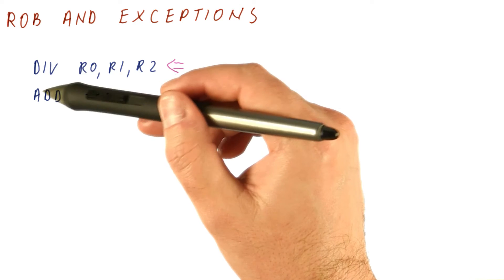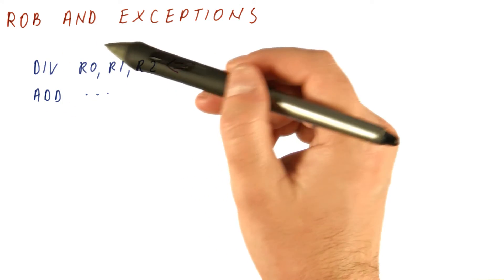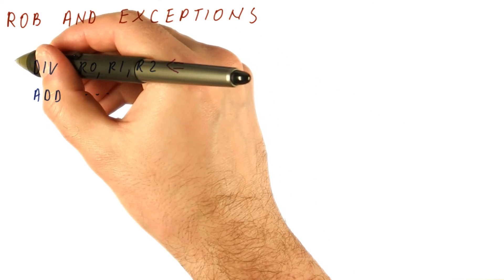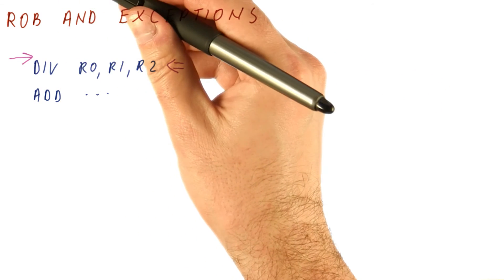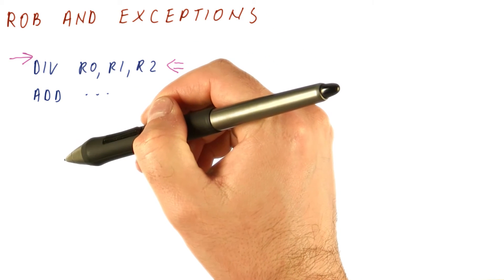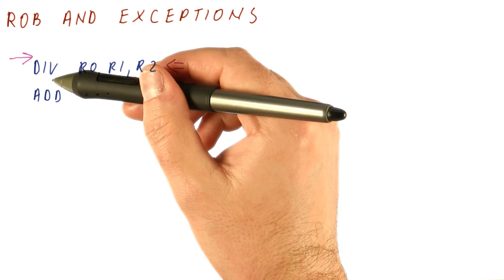We can just flush everything, including the divide, and then jump to the exception handler. Now we have a stable state for the handler. Everything before the divide finished, the divide and everything after it didn't finish, which is exactly the state that the divide by zero exception handler should be seeing.